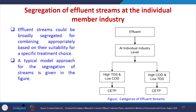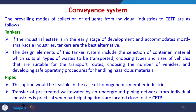Segregation of effluent streams at individual member industries: effluent streams could be broadly segregated for combining appropriately based upon the suitability of specific treatment choice. At the individual industry level, they have to be separated — for example, high TDS low COD streams from high COD low TDS streams. A separate pipe may be used for sewage effluent and industrial effluent. There are different model approaches, and some primary treatment may have to be done at the individual industry level itself.